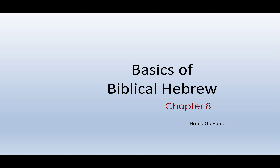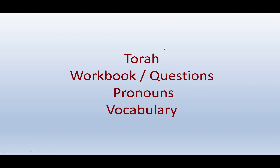Welcome to chapter 8 of Basics of Biblical Hebrew. This evening, instead of looking at modern Hebrew, we're going to be looking at the Torah — the five books of Moses, the law. Torah means law. We'll look at the names that we know as Genesis, Exodus, Leviticus, Numbers, Deuteronomy, and look at the Hebrew side of that. Chapter 8 is pronouns, with four different kinds of pronouns, and then we'll go over the vocabulary.